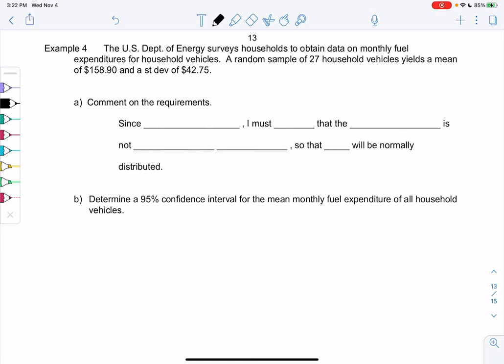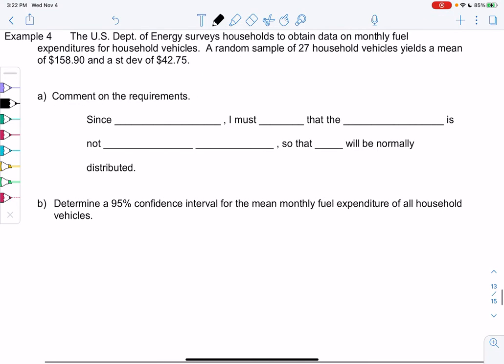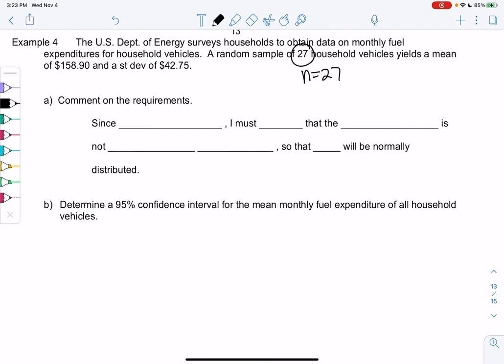Section 8.3, Example 4. The U.S. Department of Energy surveys households to obtain data on monthly fuel expenditures for household vehicles. So how much money are they spending on fuel or gas for their car? We have a random sample of 27 households, so n equals 27. A random sample of 27 household vehicles yields a mean, since this is a sample, x̄ of $158.90 and a standard deviation s of $42.75.